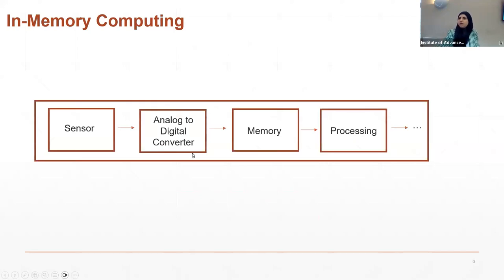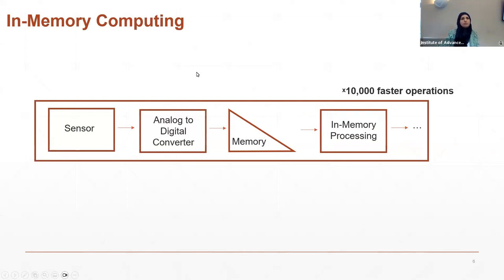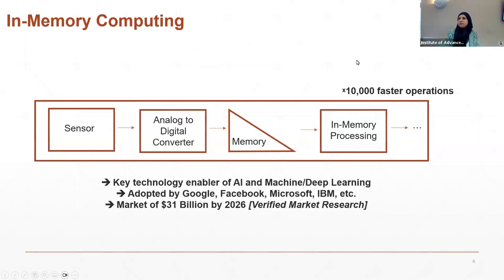To explain this concept further, consider an IoT system. IoT systems include sensors, an analog-to-digital converter — because sensor data is analog while memory and processors deal with digital data — and then the data is sent to the memory and processor. The in-memory computing approach merges memory and processor within a single device capable of both tasks simultaneously, enabling 10,000 times faster operations. It is already a key technology enabler for AI and machine learning, adopted by Google, Facebook, and IBM, with a projected market of $31 billion by 2026.